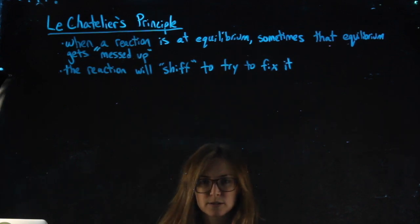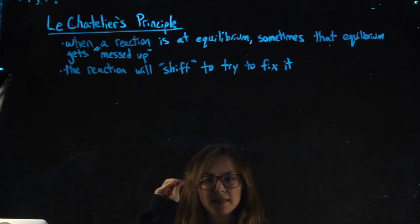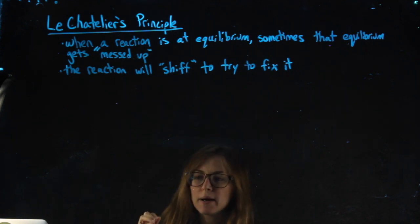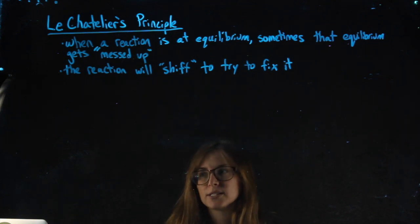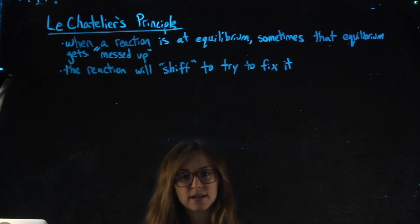This topic is called Le Chatelier's principle and it ties into what you learned about Q versus K and reaction shifting. We said if it's shifting left, that's because it's going away from the products—we need more reactants or fewer products.